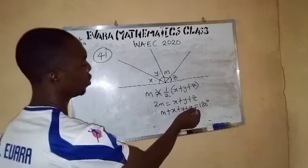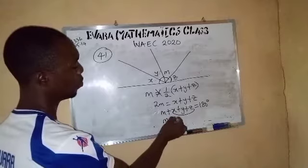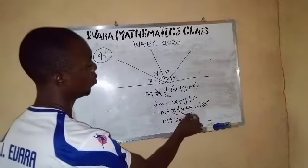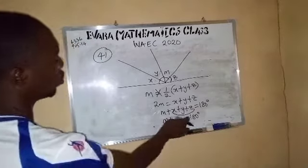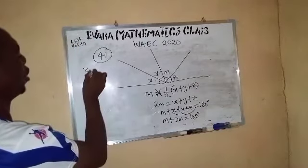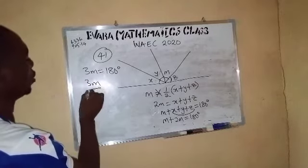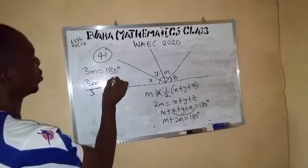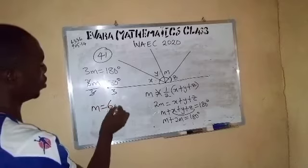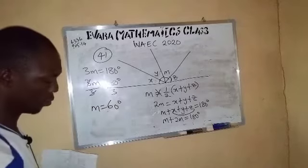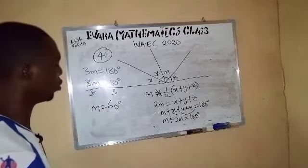And we've seen that this x plus y plus z here is equal to 2m. So I can say m plus 2m equals 180 degrees. So m plus 2m, that is 3m, equals 180 degrees. Then you divide both sides by 3. That is 60 degrees, which is option B.